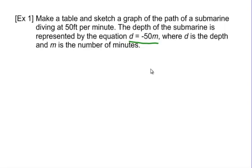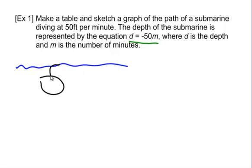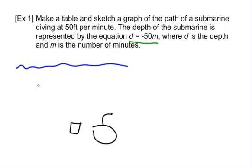It's negative 50m because it's diving. If you can picture a submarine, it's diving at 50 feet per minute. So d equals negative 50m — that is our function. Make sure you write down our function.